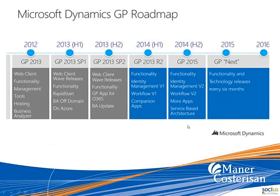The first thing I wanted to look at was just a roadmap of where GP has come and where it's going. With GP 2013, they really started to move up their release cycle. Instead of service packs lasting over a long period of time, they started doing major functionality releases every six months. We saw that with GP 2013 — they had Service Pack 1 and Service Pack 2, but then in the first half of 2014, they released 2013 R2, which had some significant updates.